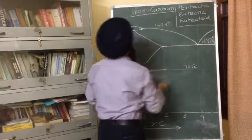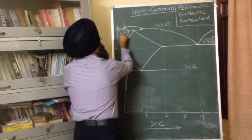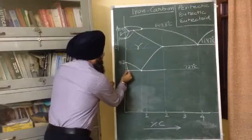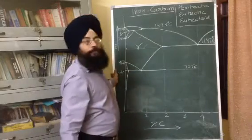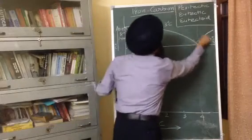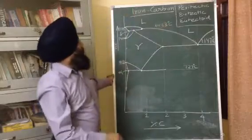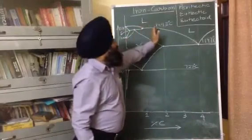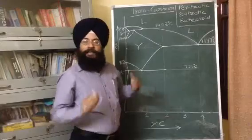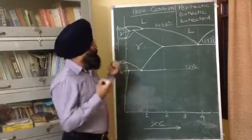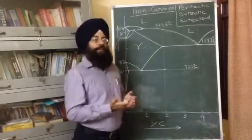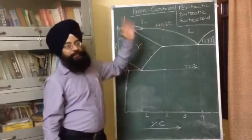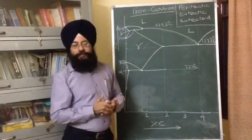In the completed diagram, one region contains delta phase only, another contains gamma austenite only, and a small region contains alpha ferrite only. Above the liquidus line, iron-carbon alloys exist in the liquid state — the liquidus line represents the melting point of the corresponding alloy. This completes the basic construction of the iron-carbon diagram. In the next video, I will discuss the various phases and the changes occurring as temperature increases or decreases for a given alloy.